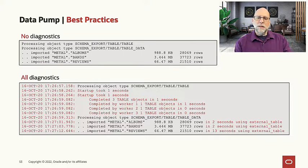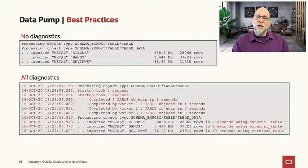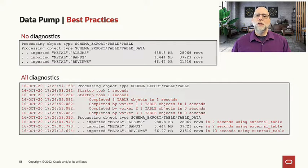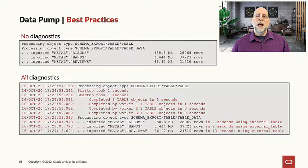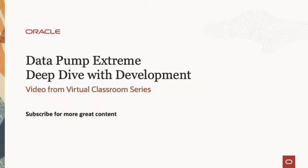We didn't make this the default yet for data pump because it does introduce inherent variability into your log files. We didn't want to break customers' existing tooling and scripting and have them filter out timestamps, for example, to see whether a job had the same results as the previous run. But at some point we may want to make these the default. So keep an eye on these and use these parameters whenever you're performing an export and import.